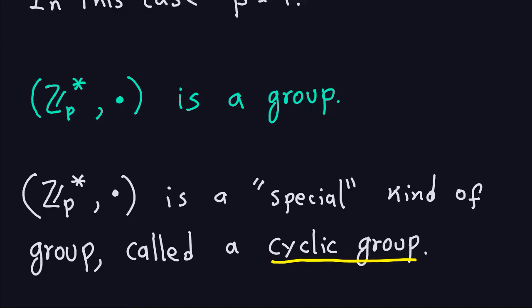Hello and welcome again. This is the second part of the sequence of videos on the discrete logarithm problem. In the last video we talked about what a group is — we said that a group satisfies properties 1 through 4. If you don't remember, go back to the previous video. The last part of that video I mentioned that this Z_p* — the collection of elements from 1 through p-1 — is what we call a cyclic group, which is a special kind of group.